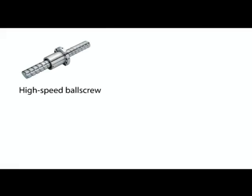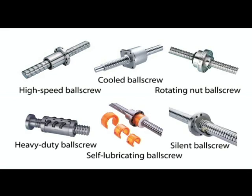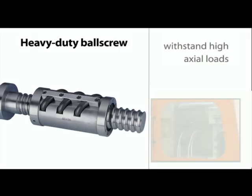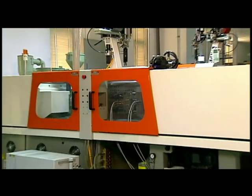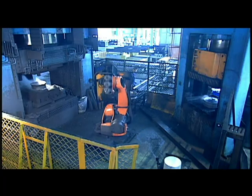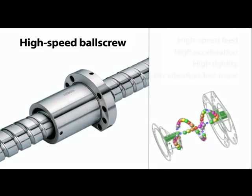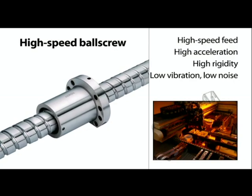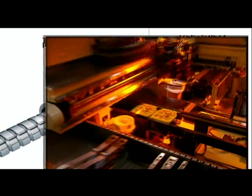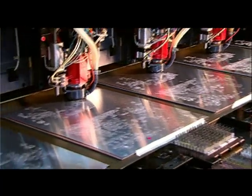Ball screws have undergone many improvements and innovations since they were first commercialized, and today many different types have been developed. Heavy-duty ball screws must withstand high axial loads and are used in all-electric injection machines, stamping machines, semiconductor manufacturing equipment, and forging machines. High-speed ball screws have high-speed velocity and high acceleration; they must be highly rigid and have low noise and vibration. They are used in fast feeds for machine tools, high-speed mold cutting center machines, and high-speed general cutting center machines.